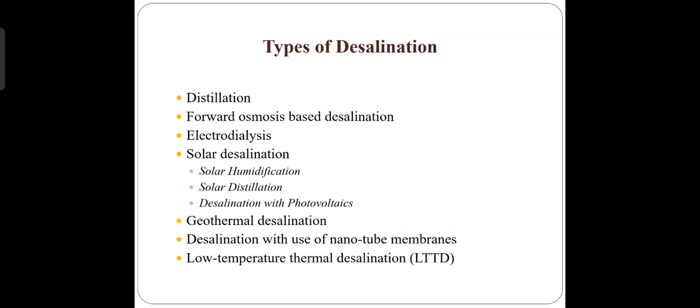The main types of desalination processes are distillation, forward osmosis-based desalination, electro-dialysis, solar desalination, which includes solar humidification, solar distillation, desalination with photovoltaics, geothermal desalination, desalination with the use of nanotube membranes, and low-temperature thermal desalination.